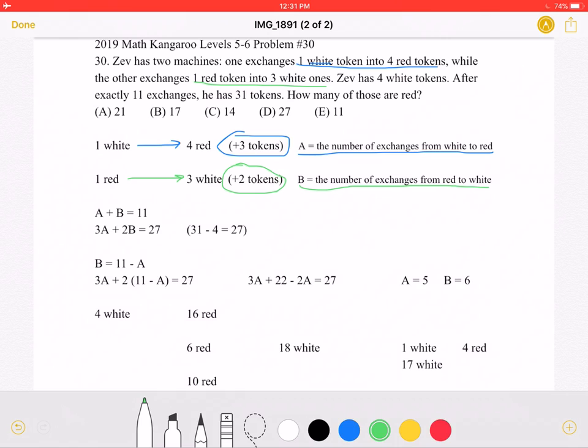So, in the problem, it states that he has made 11 exchanges. This means that A, the number of exchanges from white to red, plus B, the number of exchanges from red to white, must be equal to 11.